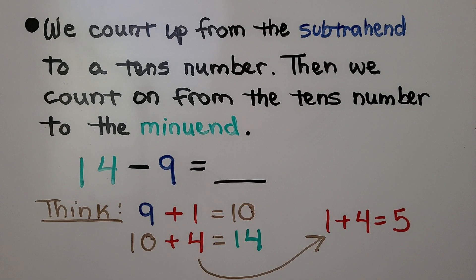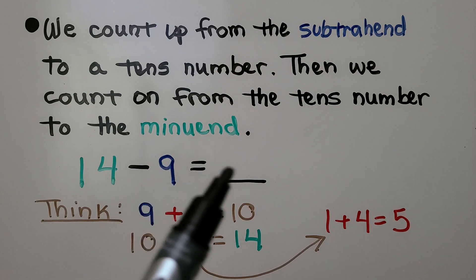We count up from the subtrahend to a tens number. Then we count on from the tens number to the minuend. So remember, this is the minuend, that's the subtrahend, and the answer is the difference.